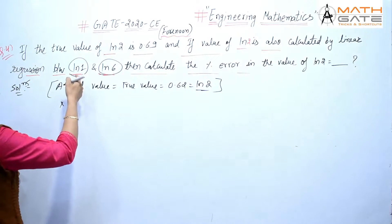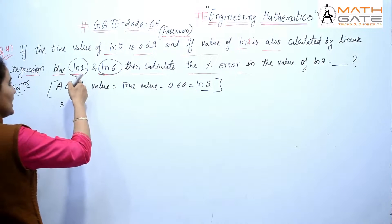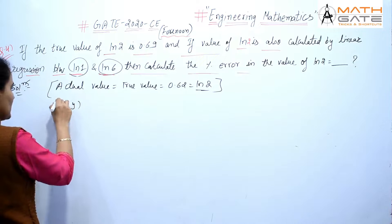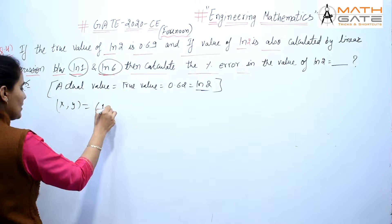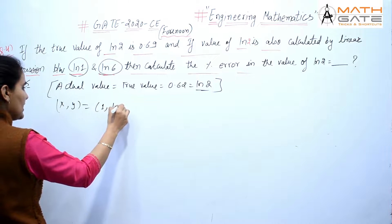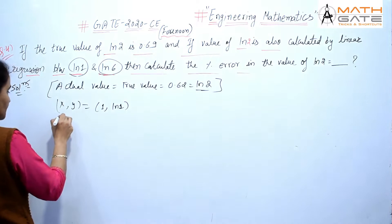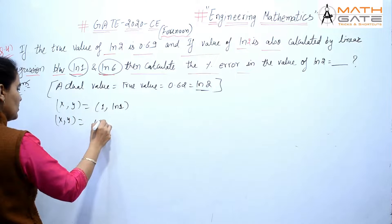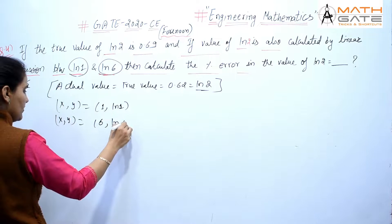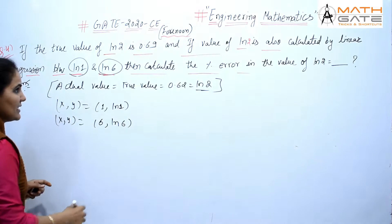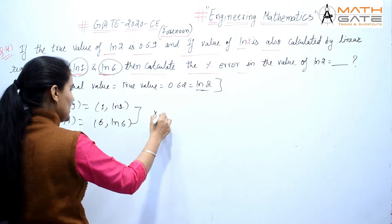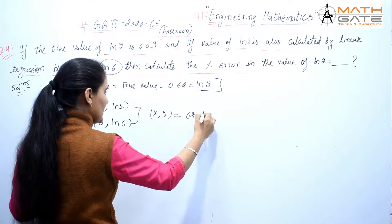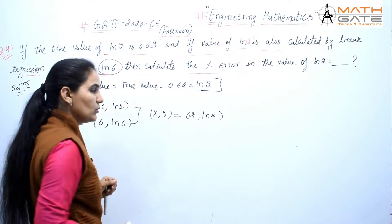The regression starts from ln1 and ends at ln6. So if the point is in the form (x, y), the first point is (1, ln1) and the second point is (6, ln6). Within these two points, we need to find y at x = 2, which gives us ln2.